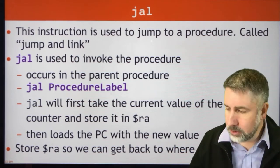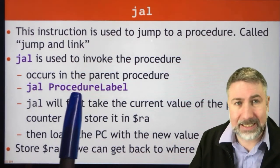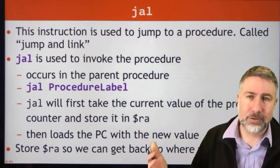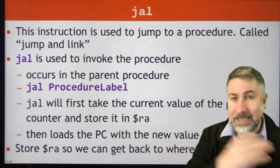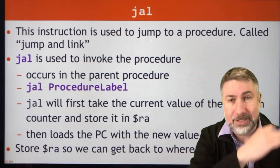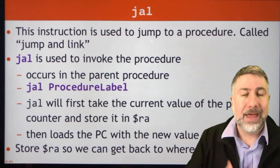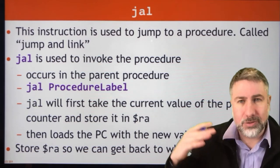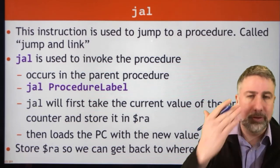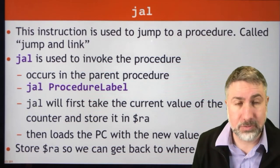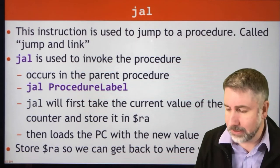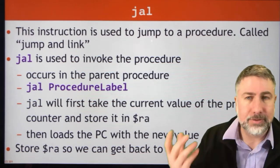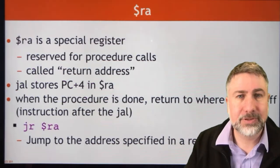It's going to look like this: jump and link to some label, and in your assembly code that label is going to represent the code that's in your subroutine. Then at the end of the subroutine you're going to get back to the original code using another special instruction. So the 'and link' part is what stores the return address.